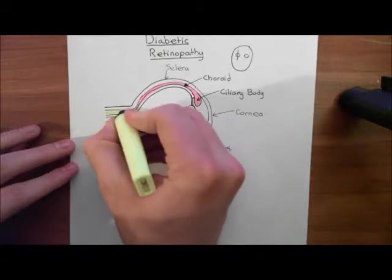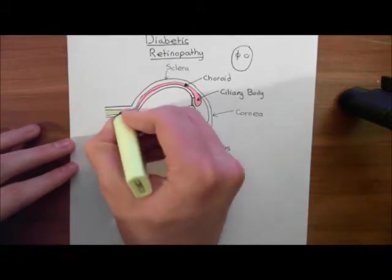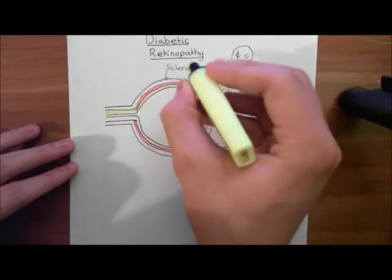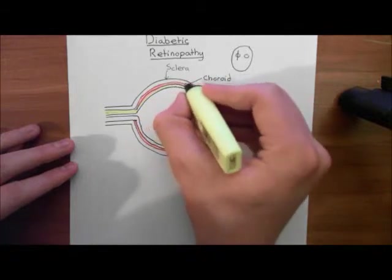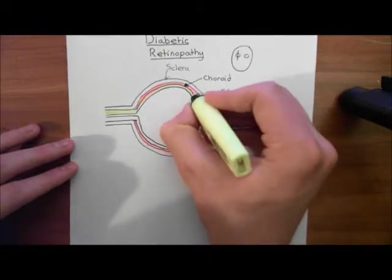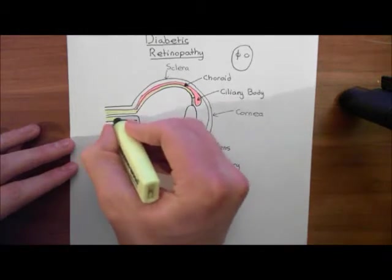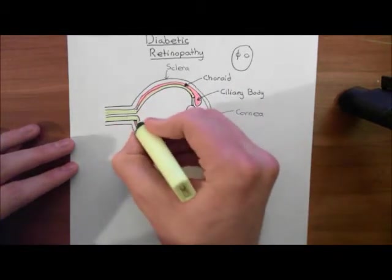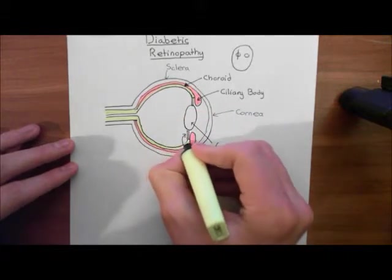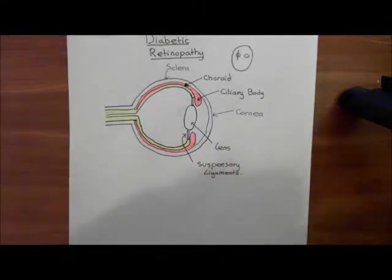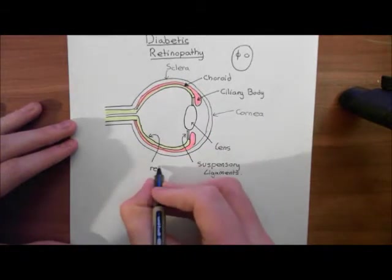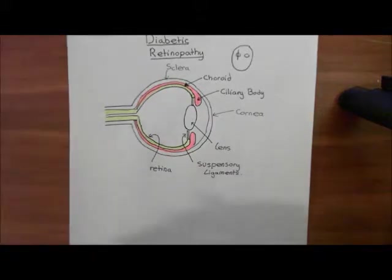Just complete that suspensory ligament up. This is a suspensory ligament. And then I'll color in the retina in yellow in a moment. I'll give the ink time to dry before I smudge it all with the yellow highlighter. So let's now color in the nervous tissue in yellow. Here is the nervous tissue within the optic nerve.